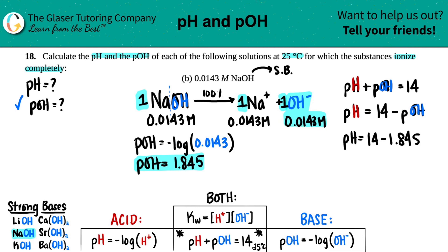So let's see, 14 minus 1.845. And I get a pH value. Whoa. Love when that happens. pH equals 12.155. And there we go.